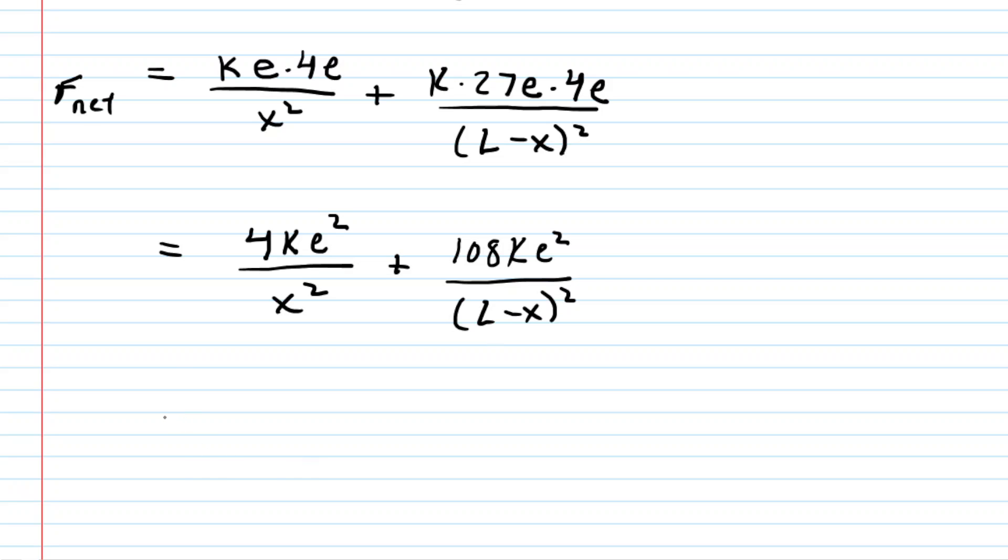It's going to turn out to be easier if we factor out a greatest common factor. They have a lot in common, actually. They have a factor of k, they have a factor of e squared, and then they actually have a factor, if you look at the 4 and the 108, the greatest common factor there would be 4. So we can factor out a 4ke squared from both of these force expressions. In the first force expression, that would leave a 1 in the numerator over the x squared. And then if we divide 108 by the 4 that we factored out, we get that 27 back. So we have 27 over the L minus x squared.